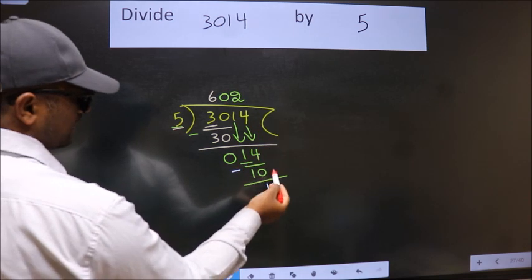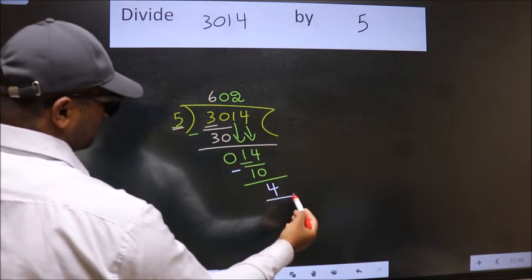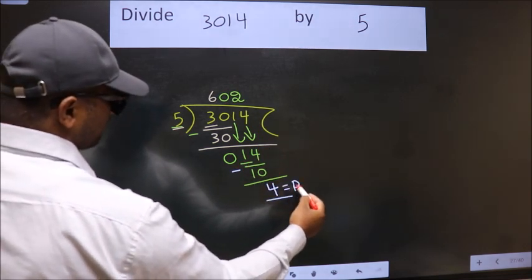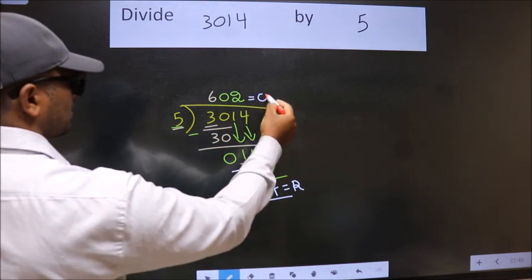No more numbers to bring it down. So we stop here. This is our remainder. And this is our quotient.